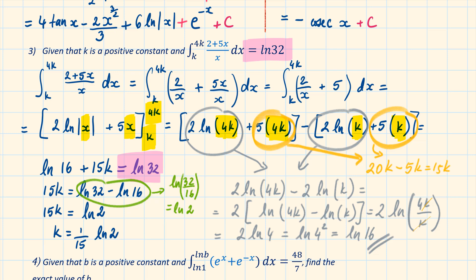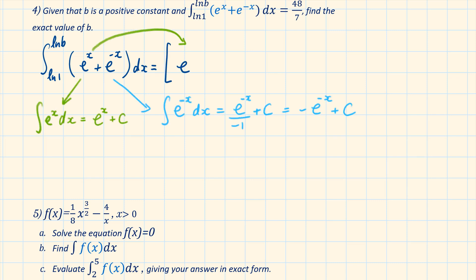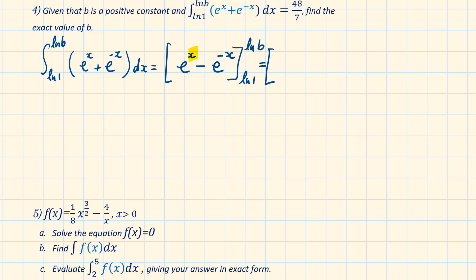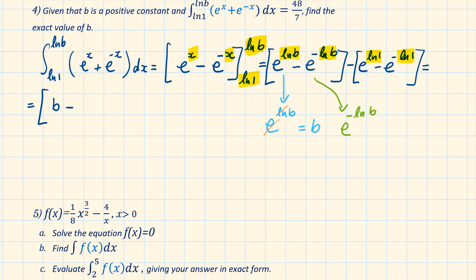Question 4: given that b is a positive constant and the integral from ln 1 to ln b of (e to the power of x plus e to the power of minus x) dx equals 48 over 7, find the exact value of b. Integrating each term separately, we have e to the power of x minus e to the power of minus x. Notice the change of sign to minus. Applying the limits from ln 1 to ln b: substitute ln b for x — we get e to the power of ln b minus e to the power of minus ln b, minus the result of substituting ln 1 for x, which is e to the power of ln 1 minus e to the power of minus ln 1. Since ln has base e, e to the power of ln cancels out: e to the power of ln b equals b. Using the log rule, minus becomes a power of minus 1, so e to the power of minus ln b equals b to the power of minus 1. e to the power of ln 1 equals 1, and e to the power of minus ln 1 is also equal to 1.